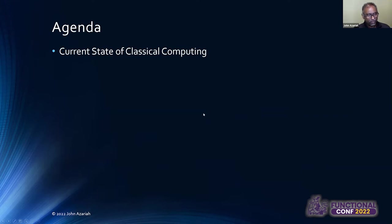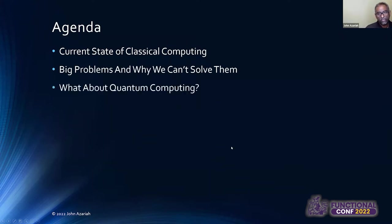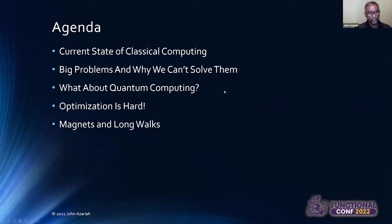So, let's start by talking a little bit about the current state of classical computing, what are the big problems we have and why we can't actually solve them, a little bit of an introduction to quantum computing, and then segwaying into quantum optimization and optimization in general. And we'll wrap up with showing some code and talking about magnets and long walks.